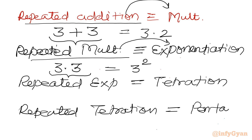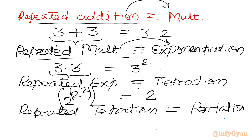Let us understand through an example. Repeated exponentiation: 2 power 2 power 2 — this forms a tower, which is why it is called a tower. The symbol notation is 3 written in the top left corner of 2, meaning 2 tetrated 3 times. For repeated tetration, we write 2 super-power 2 super-power 2, and the notation is 3 written in the bottom left corner of 2, meaning 2 pentated 3 times.